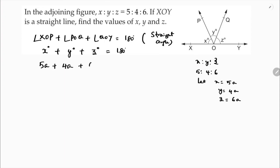Using the ratio 5:4:6, we have 5a plus 4a plus 6a equals 180 degrees. So 5 plus 4 is 9, and 9 plus 6 is 15, giving us 15a equals 180 degrees. Therefore, a equals 180 divided by 15, which gives a equals 12.